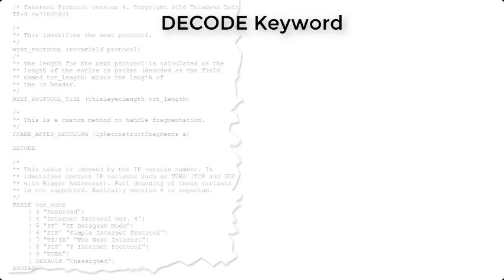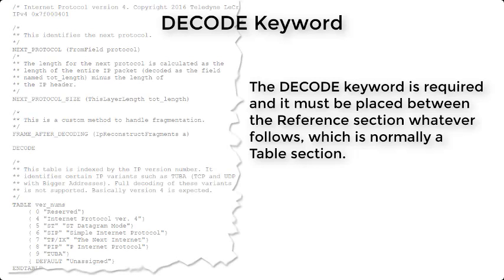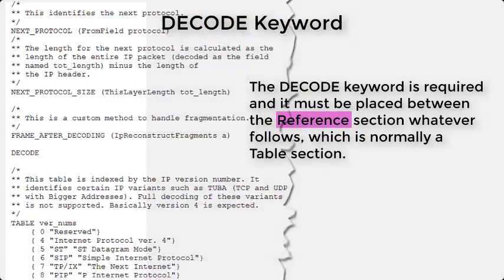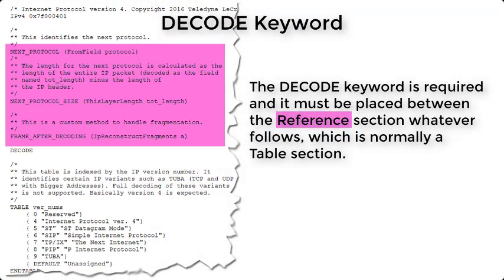This section contains a single but important keyword. The keyword decode flags the beginning of the local decoder commands for your protocol. The keyword decode must be placed between your reference section and whatever follows.